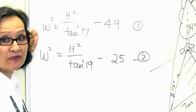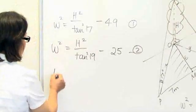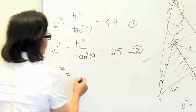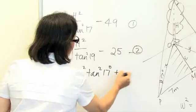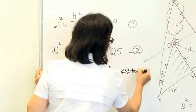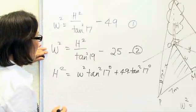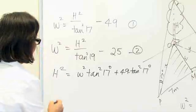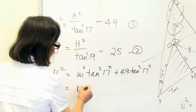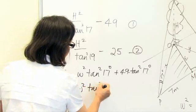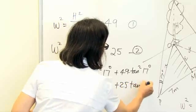Multiplying every term in the first equation by tan squared 17, we get H squared tan squared 17. And multiplying the second equation by tan squared 19, we get H squared equals W squared tan squared 19, plus 25 tan squared 17.